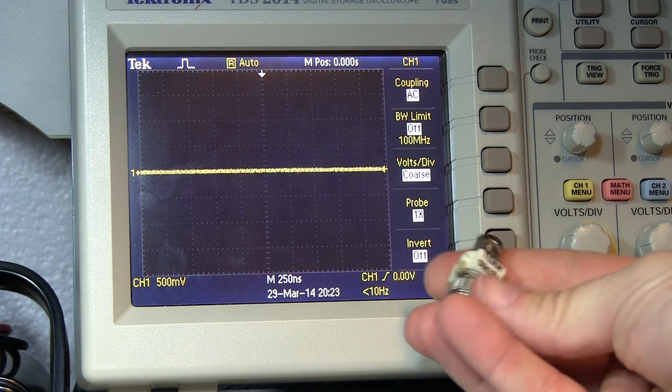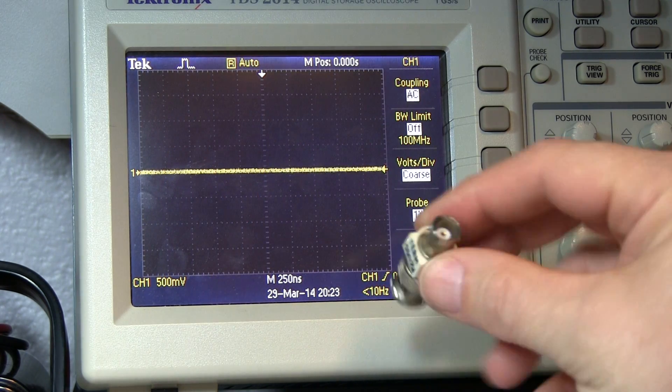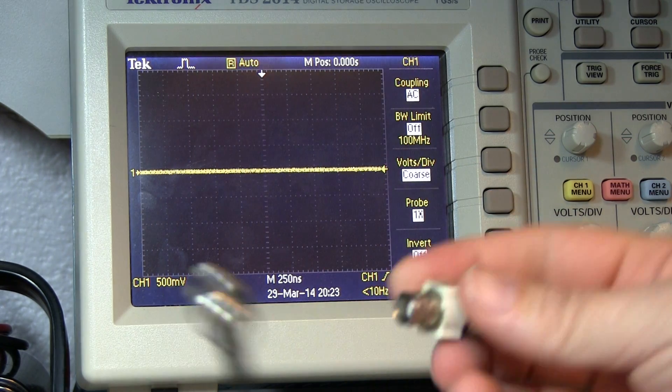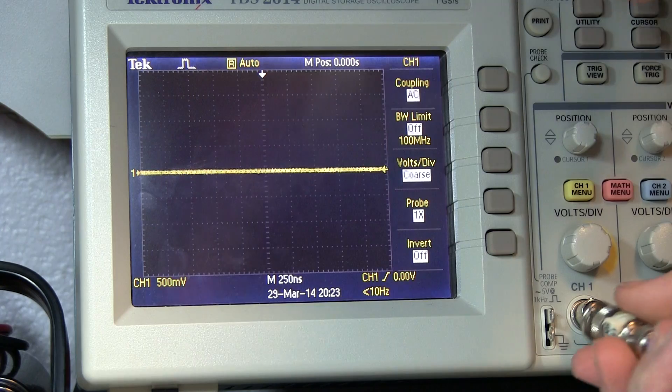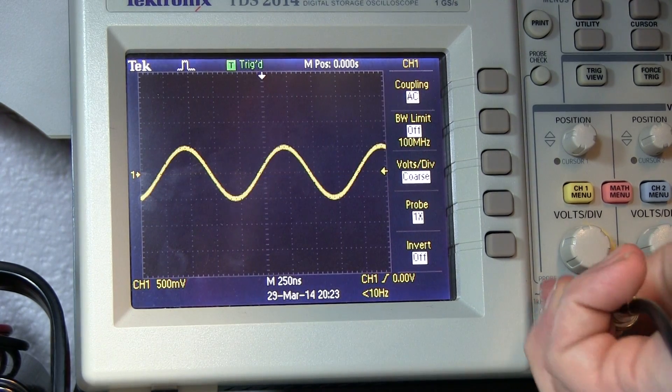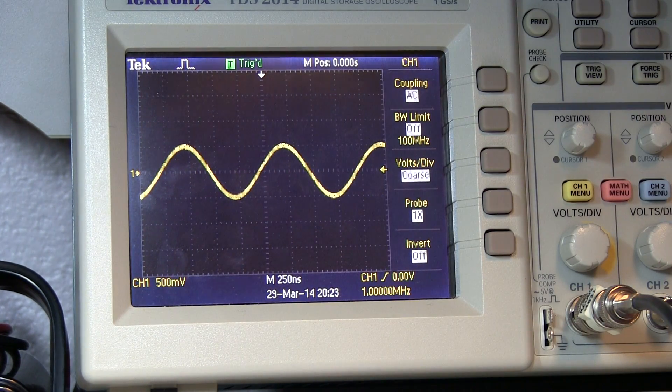So something like this, this one here is just a coaxial through terminator, and we could connect that up to the end of the coax and put that into the scope. All right, and now we get our correct one volt peak to peak.